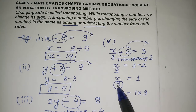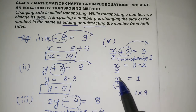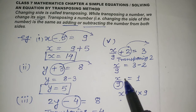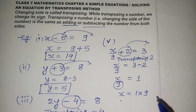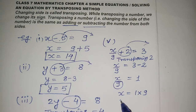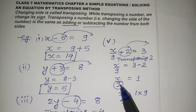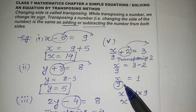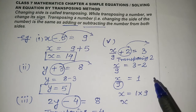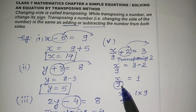So x equals 9. In the transposing method, we don't need to write 'multiply both sides by 9' every time — we simply bring what is in multiplication to division on the other side, or what is in division to multiplication. Importantly, do not change the sign in multiplication and division — sign change only happens with plus and minus.